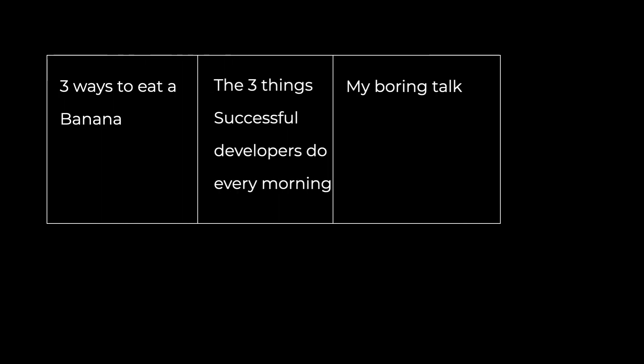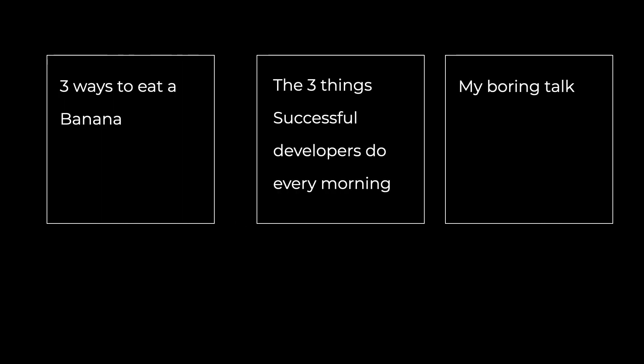Problem number one: boring titles. The title of your session is valuable real estate. It needs to be attention-grabbing. Imagine that you are at a conference with multiple sessions going on at the same time — you will glance through them. So if the title doesn't grab your attention, you will not even try to look at the abstract. You need to understand that you are competing for attention, not only at the time of the conference, but also at the time of the review. You are one in a thousand, so you need to write a title that will catch the attention of the committee.